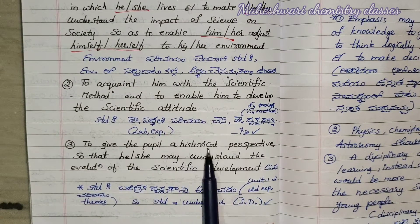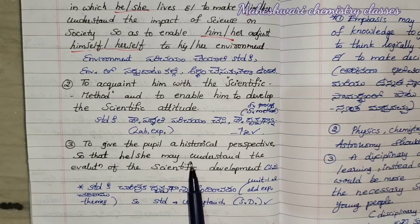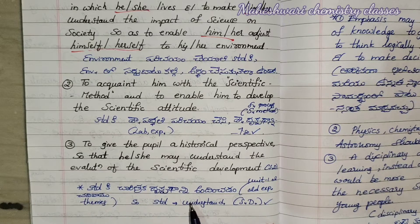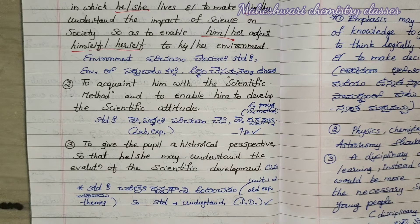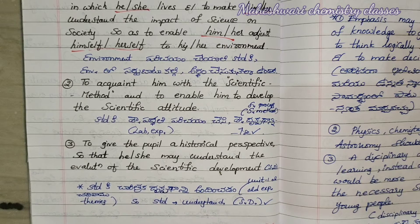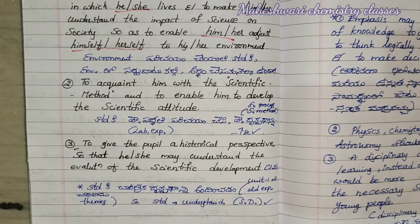Third point: to give the pupil a historical perspective so that he or she may understand the evolution of scientific development. Old experiments and theories provide a historical perspective so that the student understands scientific development.